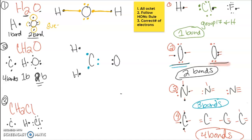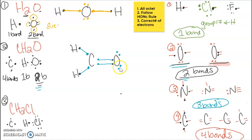Checking the HONK rule: oxygen wants two bonds — one and two bonds between carbon and oxygen — so that's a double bond. Hydrogen wants one bond — one bond for each hydrogen. Carbon has one, two, three, four bonds: two singles with the hydrogens and one double with oxygen. Now adding lone pairs — only oxygen has lone pairs, two lone pairs. Total electrons: two, four, six, eight, ten, twelve. Carbon gave four, hydrogen gave two, oxygen gave six — adding up to twelve electrons.